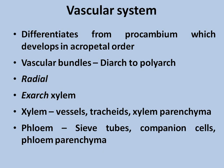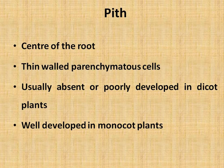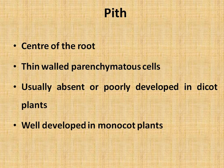Dicots show diarch condition and monocots show polyarch condition. If pith is present, it is generally located at the center and is composed of thin-walled parenchymatous cells. The pith cells are always parenchymatous and thin-walled. In dicot plants, pith is generally absent or very poorly developed in the roots.